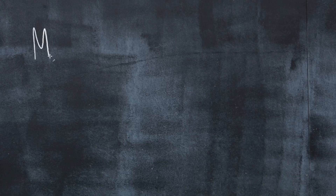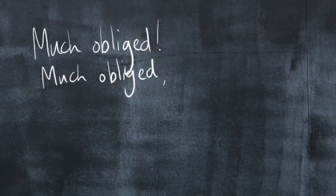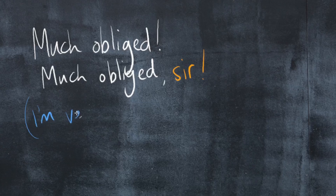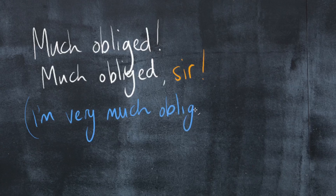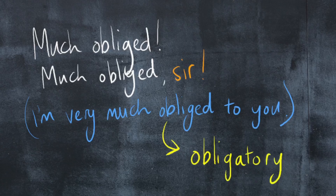You've then got 'much obliged,' which some people would say is quite old-fashioned. The older generation still tend to use it. I now just use it as a joke with my friends because it's very, very formal: 'Much obliged, sir.' The original sentence is 'I'm very much obliged to you,' with 'obliged' coming from the word 'obligatory' — meaning it's necessary or compulsory — which is why it was a business phrase, since when you're paid to do a job it's obligatory that you do it.